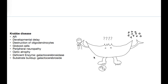Next is globoid cells — if you look at histo for Krabbe's disease you see globoid cells, and to remember that I have my crab stepping on a globe. Next I've got peripheral neuropathy, just like Fabry disease — my crab is wearing cleats, which helps remember the numbness and tingling in the feet. For optic atrophy, I've got my crab drawn with really, really small eyes.